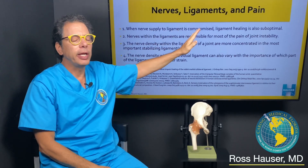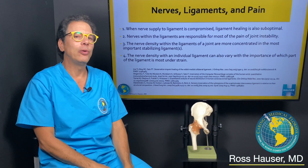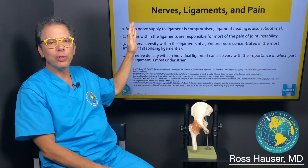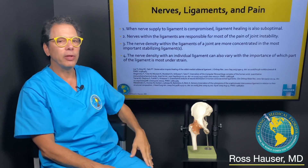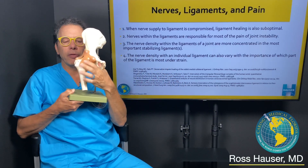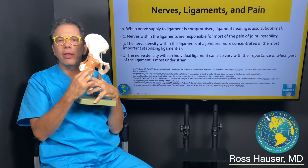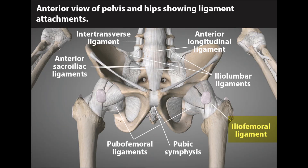When the nerve supply to the ligament is injured, the ligament doesn't heal so well. So sometimes as a prolotherapist, I actually have to address the nerve that goes to the ligament to get the ligament to regenerate optimally. Nerves within the ligaments are responsible for most of the pain of joint instability, and the nerve density within the ligaments of a joint is concentrated in the most important stabilizing ligaments. In the hip joint, that's the iliofemoral ligament — the main ligament in the front of the hip — which has the most nerve endings and would be the primary ligament we regenerate with prolotherapy.